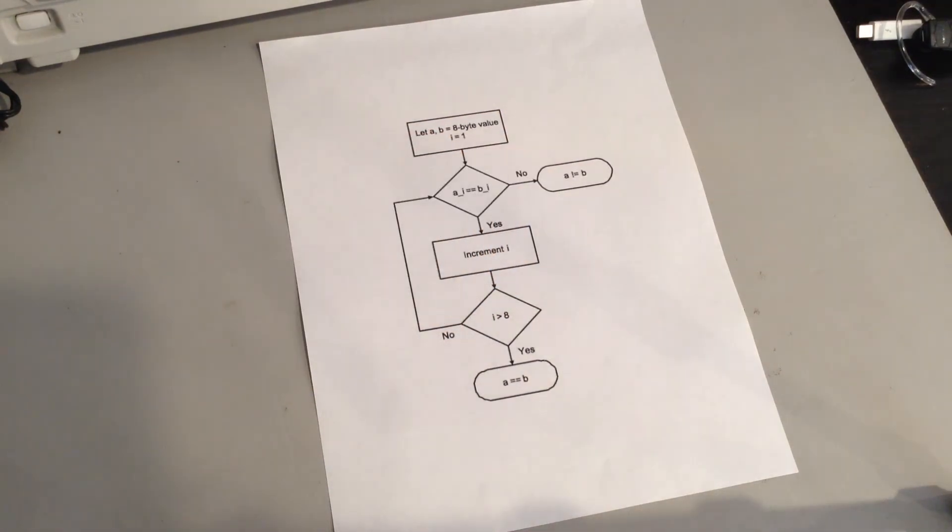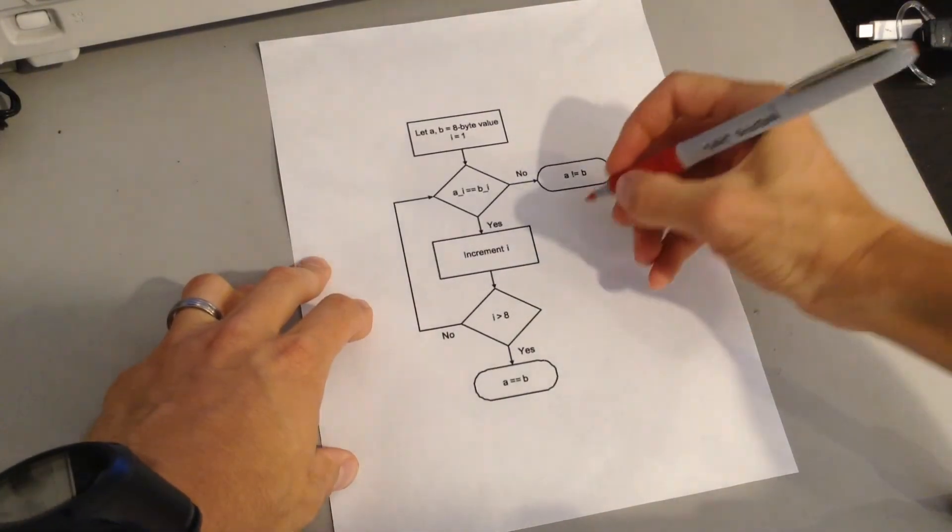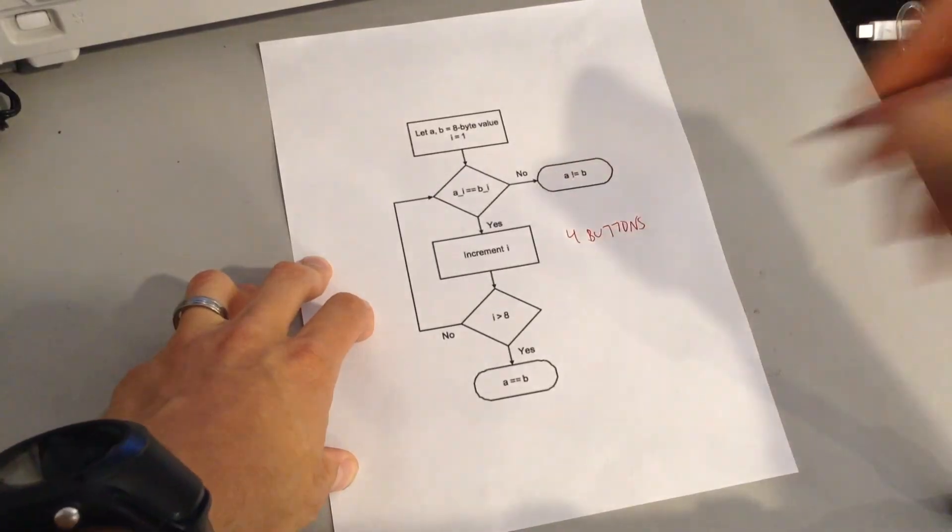What that means is the longer the compare routine happens, the closer you are to guessing the correct password. If you're able to exploit a timing attack, you can reduce the key space by a huge amount. For our situation, we have four buttons and a four-digit pin.